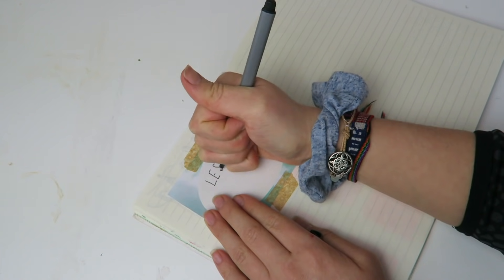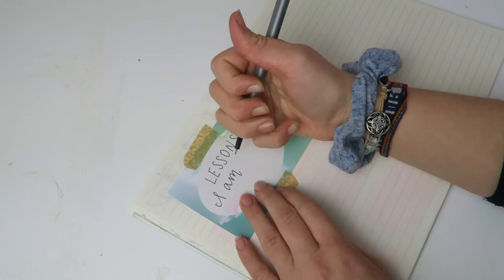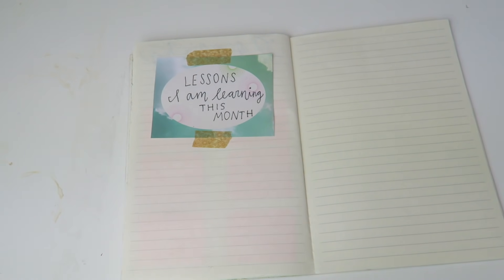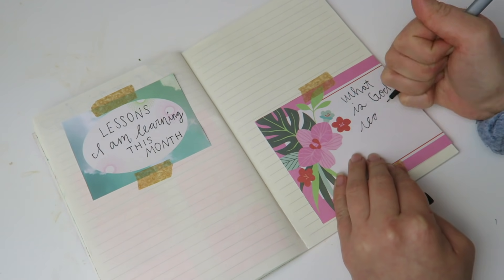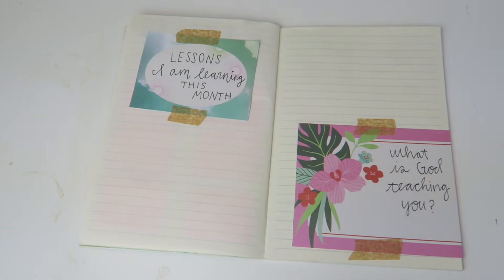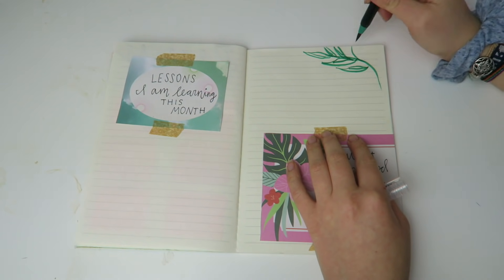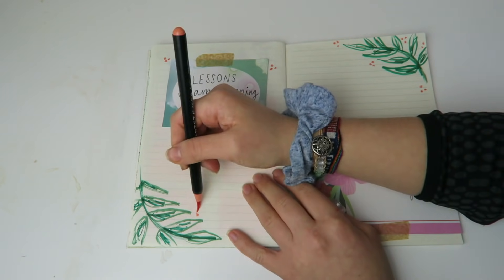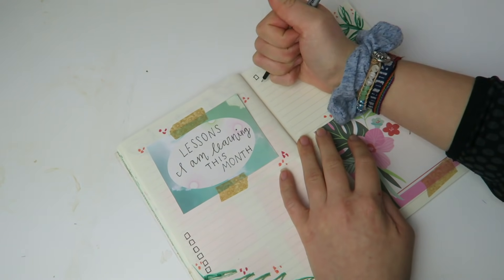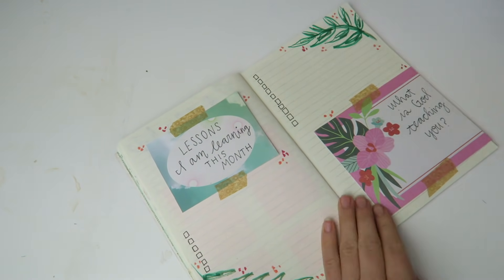The next section I have is what is God teaching me? So what are the lessons I am learning this month? It's important, again, to be making sure that you're learning from your mistakes and you are reflecting on what you're doing in life and how what God is teaching you in the season of life that you're in. And so I just find it nice to be able to write it down.